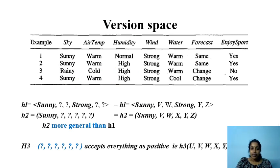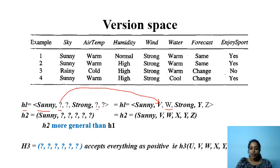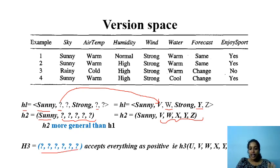Consider hypothesis H1: (sunny, ?, ?, strong, ?, ?). The question marks mean any value is possible for those attributes (e.g., air temperature), while 'sunny' means only that value is possible for the sky attribute. In this explanation, question marks are replaced with variables: W, Y, and so on. H2 similarly has 'sunny' for sky and variables for remaining attributes. H3 uses all question marks (all variables), meaning any value is possible for all attributes.